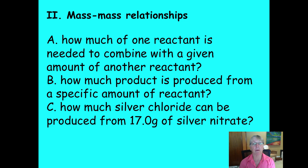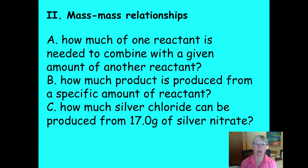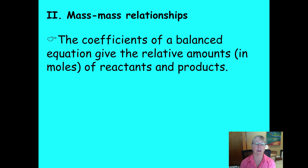Problems can give you moles and ask you to solve for moles — that's a mole-mole problem. They could also be mole-mass or mass-mole: someone gives you grams and you solve for moles, or vice versa. For this particular problem — how much silver chloride can be produced from 17 grams of silver nitrate — the first thing you always start with is a balanced equation.